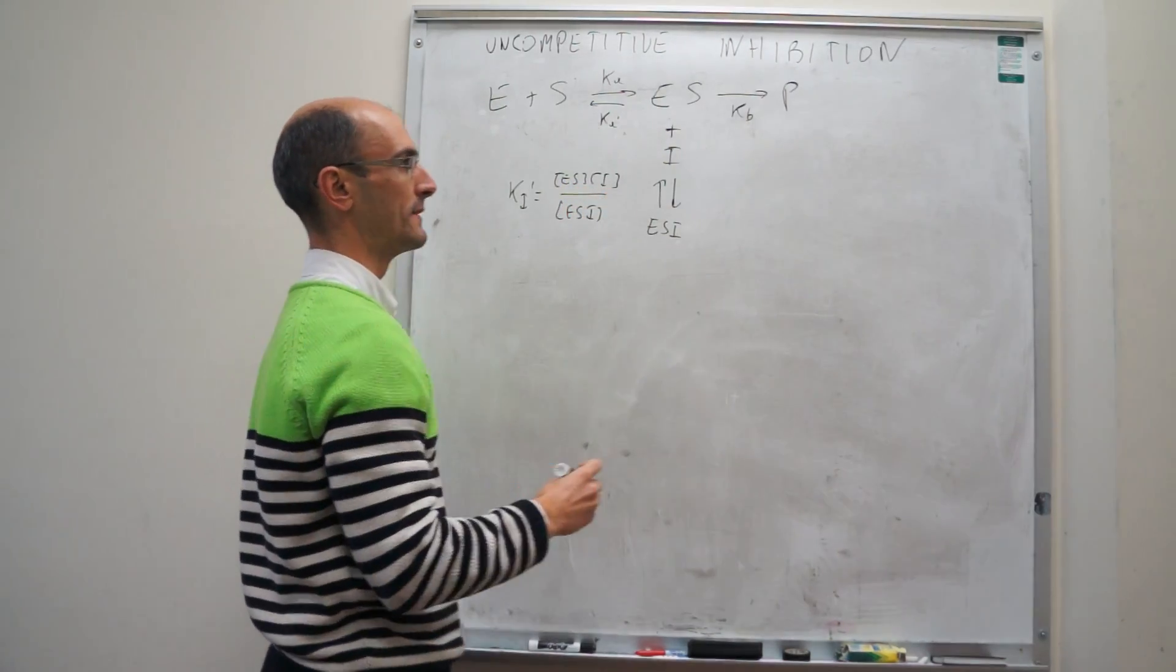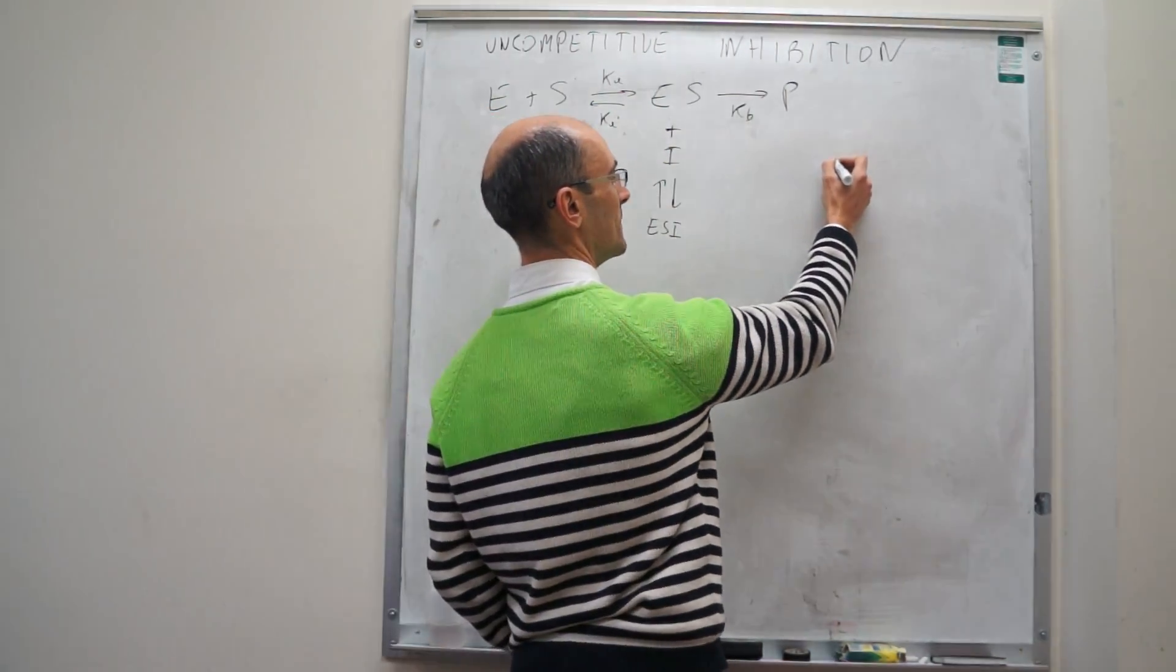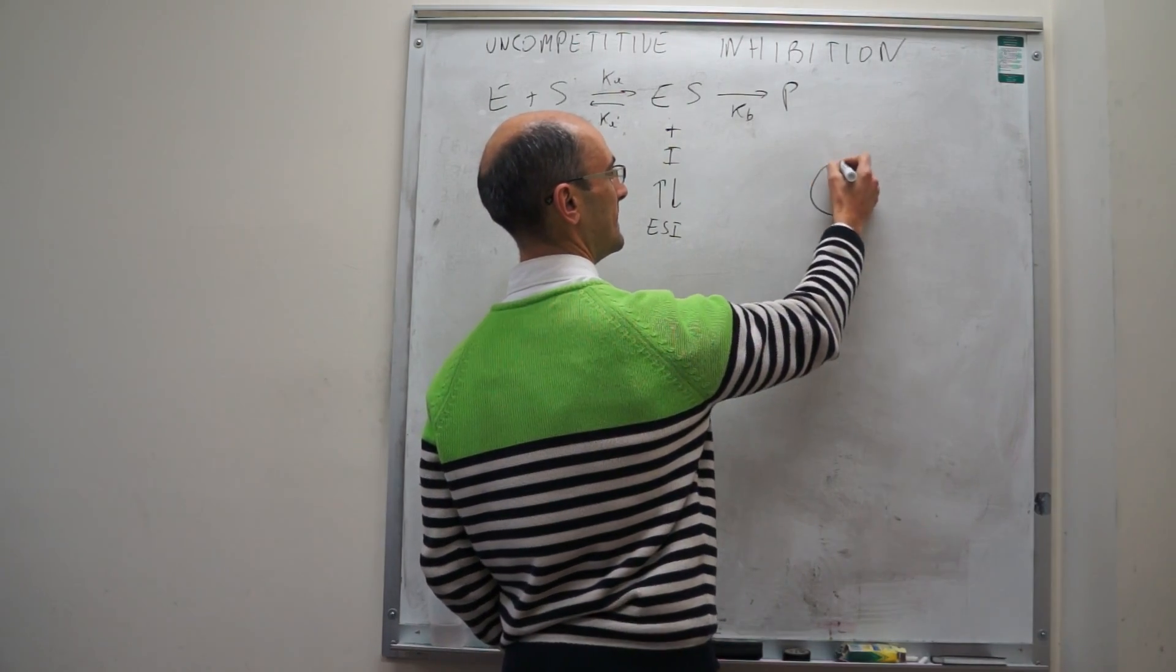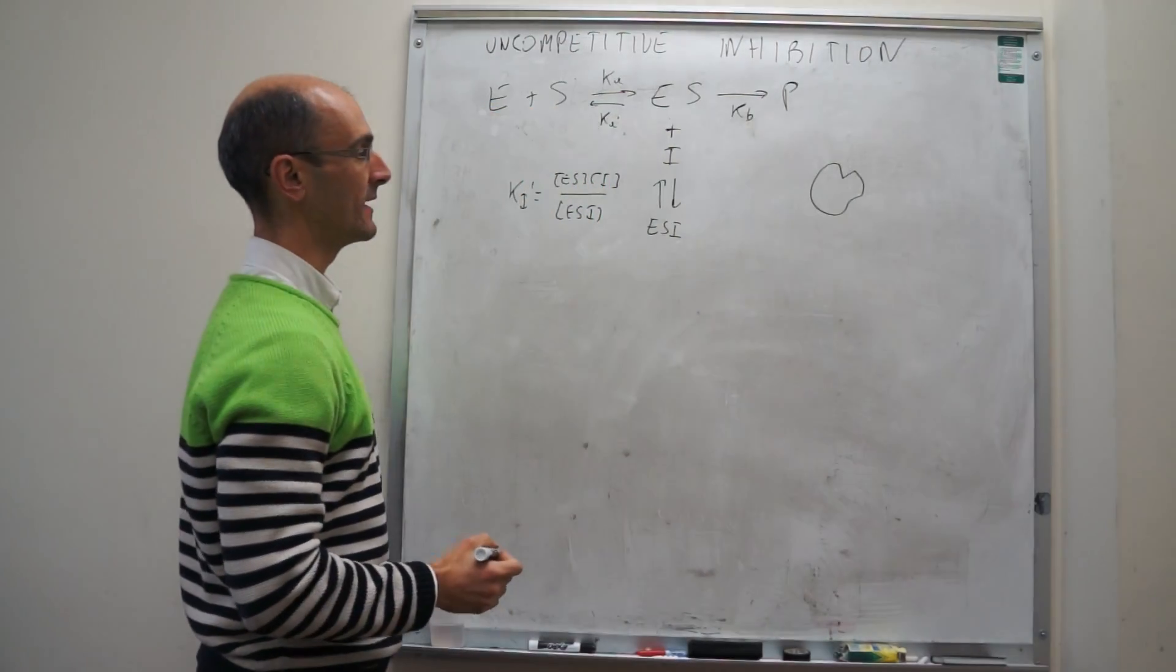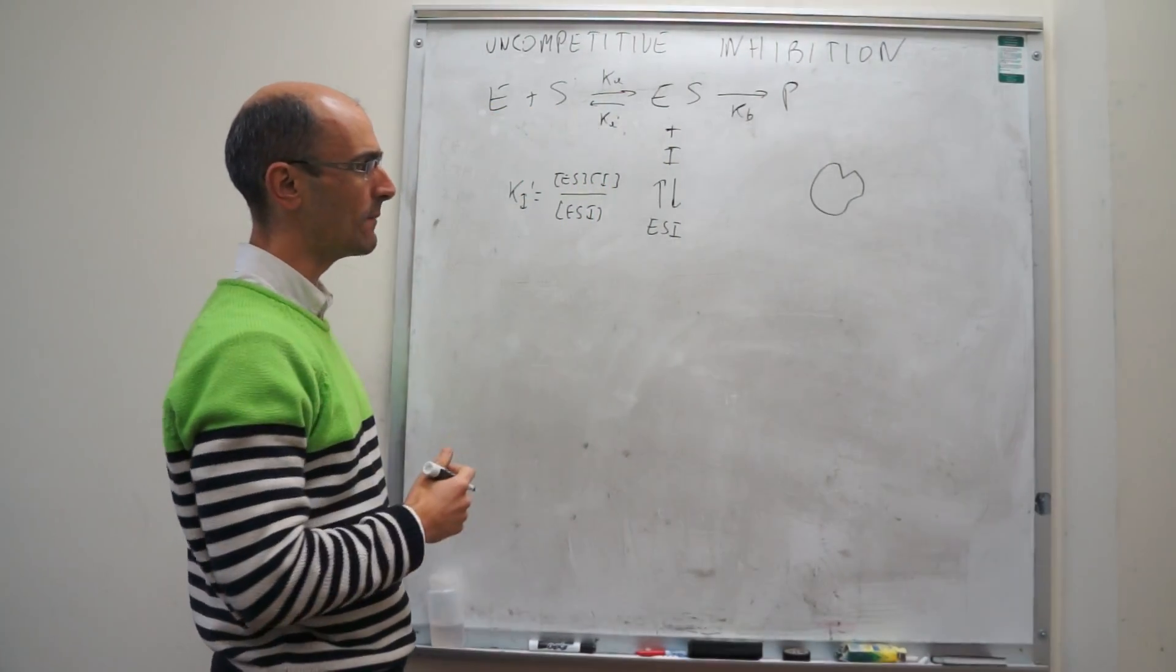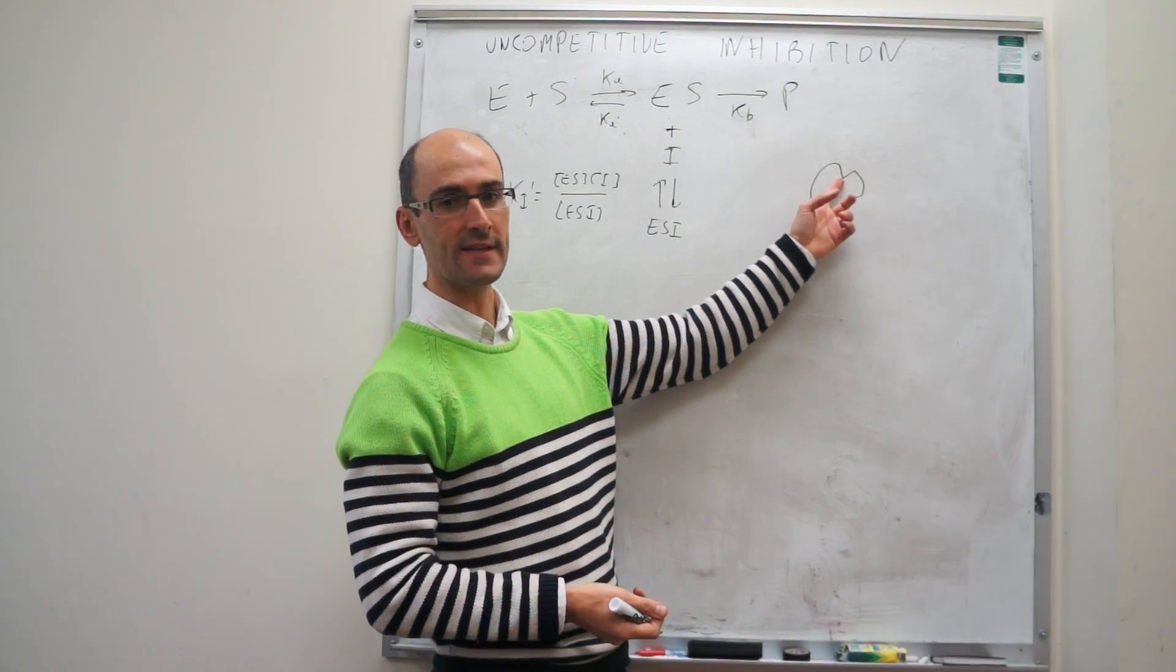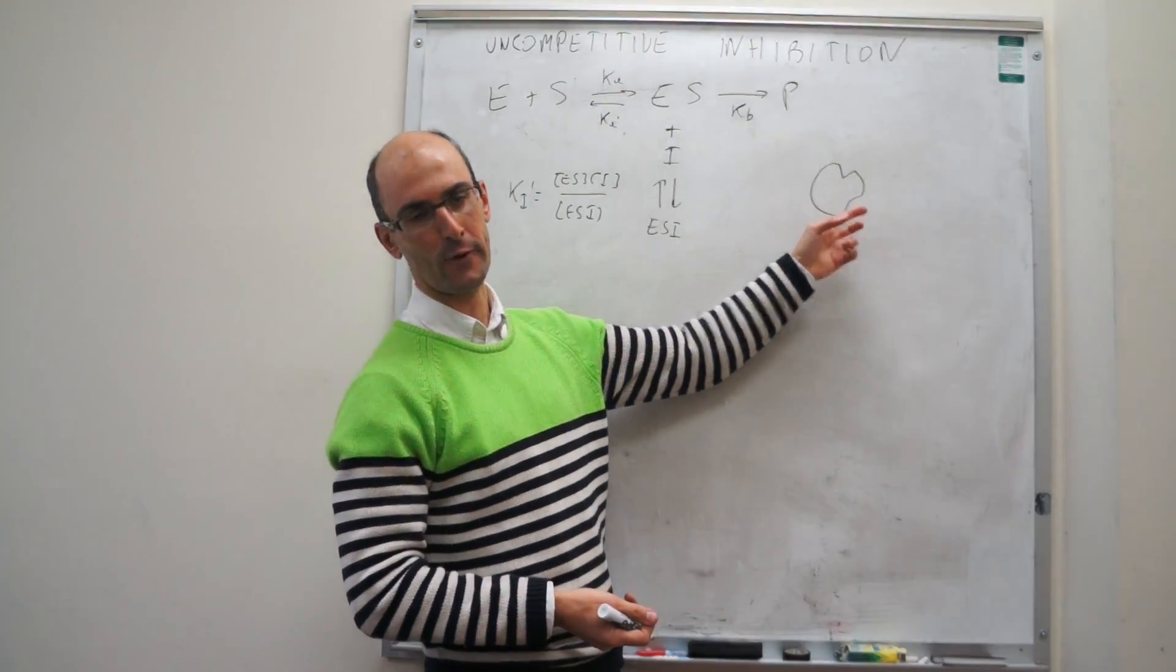We can talk a little bit about the mechanism for this type of binding. One of the things that you could think about is, how is it possible that the inhibitor can only bind to the enzyme-substrate complex? Well, you can imagine that the enzyme might have one active site that is clearly formed and another one that is not fully formed.